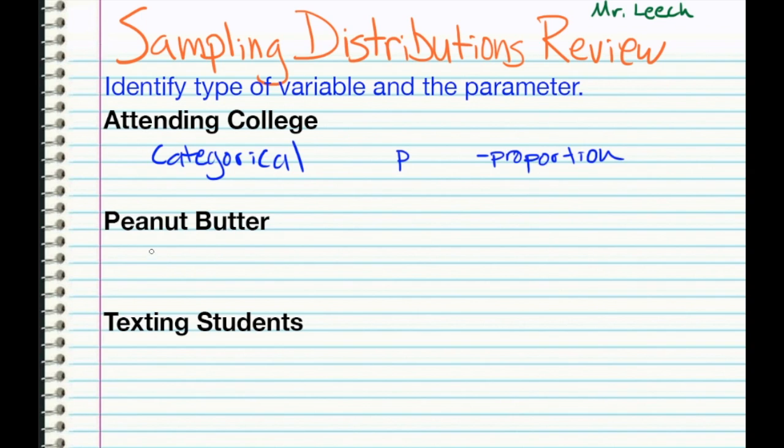The peanut butter example, this is going to definitely be quantitative. This is quantitative because each jar is going to have a weight and it makes sense to take the average. It's not a yes or no. You're not fitting them into a category or not. You're actually going to have a number. This number has a unit, and so it's going to make sense to find the mean of that. Speaking of the mean, its parameter is the mu.